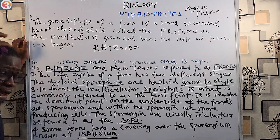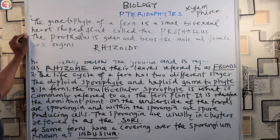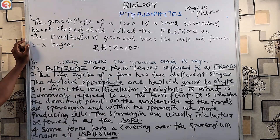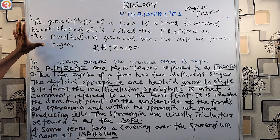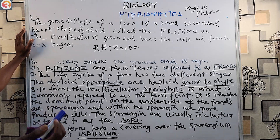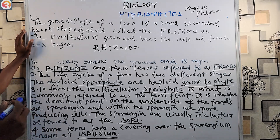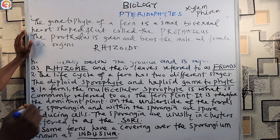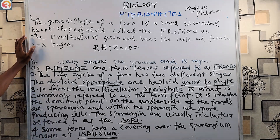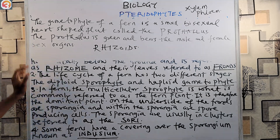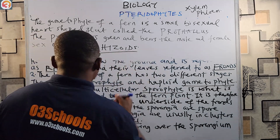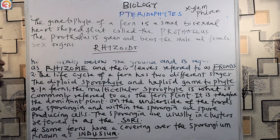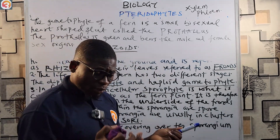If you know this, you already know a lot about pteridophytes and ferns, and can answer any question that comes under ferns in your exam. To recap: the gametophyte of a fern is a small, bisexual, heart-shaped plant called the prothallus. It is green, bears male and female sex organs, and is attached to the ground by rhizoids.